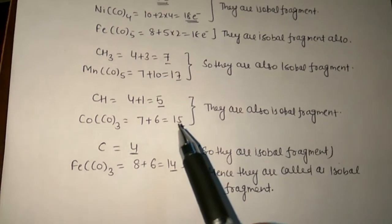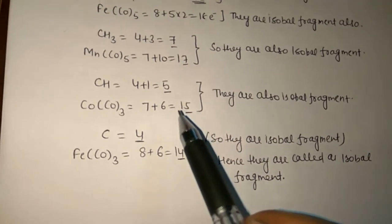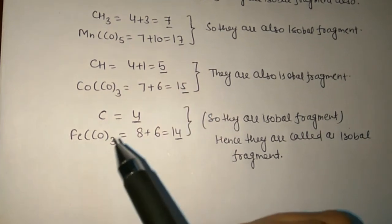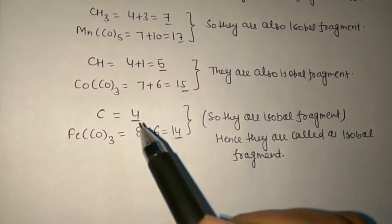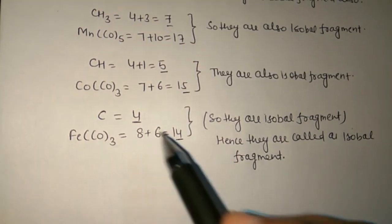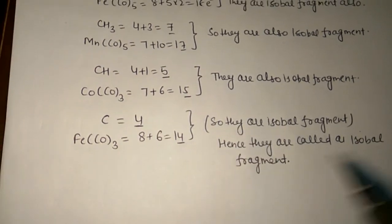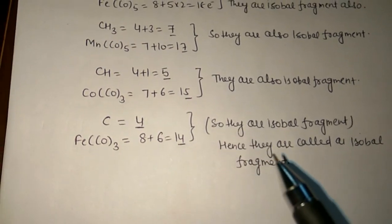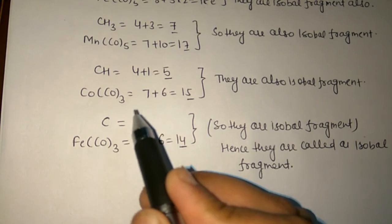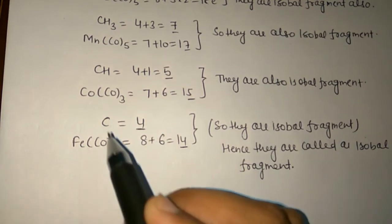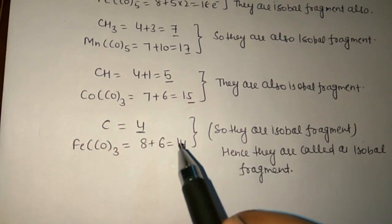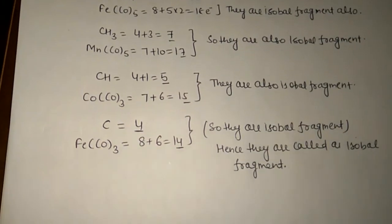Again, for carbon there are 4 electrons, and for Fe(CO)3 the last digit is also 4, so they are isolobal fragments. Hence, we can simply see that if the last digit of the electron count matches between two compounds, those two species are isolobal fragments. Thank you.